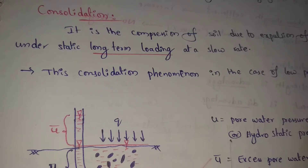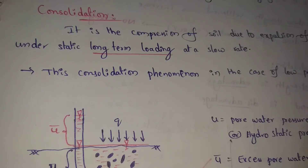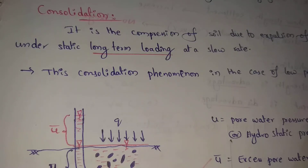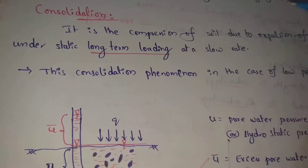We need soil samples. In the soil samples, we have air voids and water present. In this soil sample, we have an expulsion of the water. That means soil samples will compress. That means we have consolidation. This consolidation involves different kinds of processes. Why? Under static long-term loading at a slow rate.